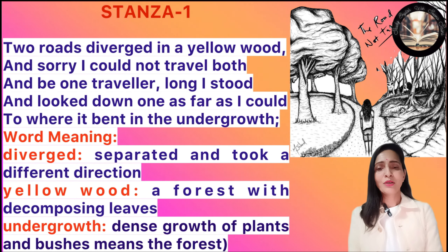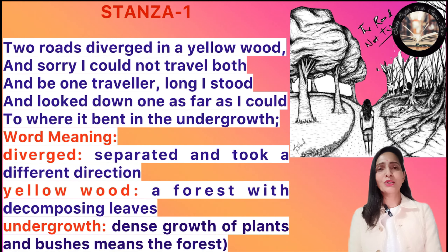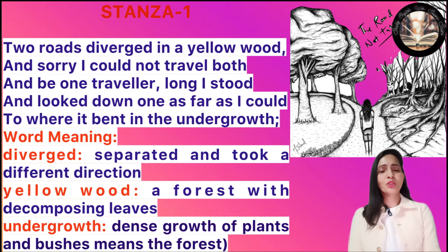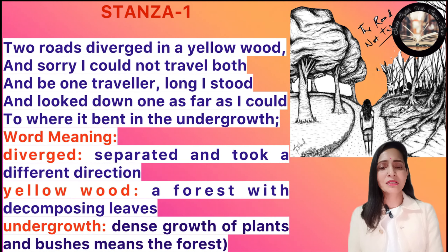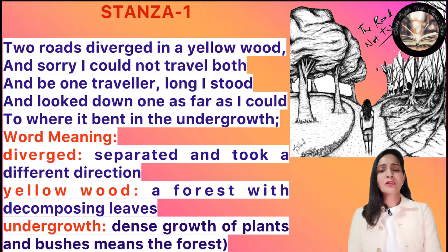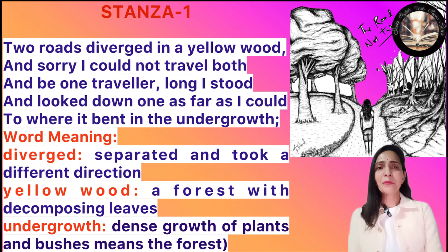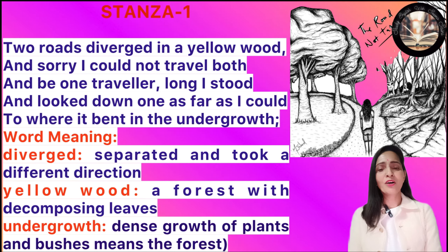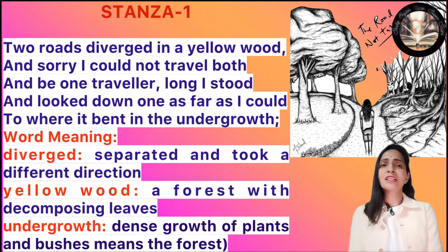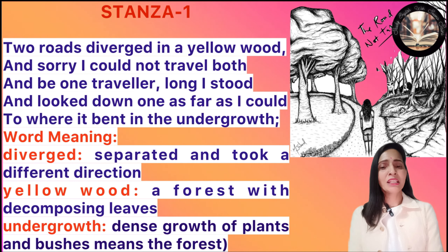He looked down the road as far as he could, to where it went into the undergrowth — undergrowth means the dense growth of plants and bushes near the forest. The poet kept looking until the road disappeared into the plants and bushes of the forest.